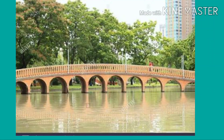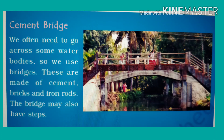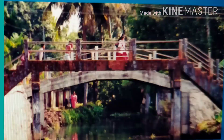After knowing about the uses of pulley, now let's know about the cement bridge. This is our second topic. Definitely you will have used a cement bridge for crossing some water bodies like a river, lake, etc. Cement bridges are made of cement, sand, bricks, and iron rods. The cement bridge may also have steps so we can walk easily on it. You can also see cement bridges at a railway station, used to cross platforms — for going from one platform to another.